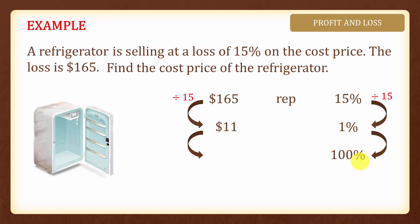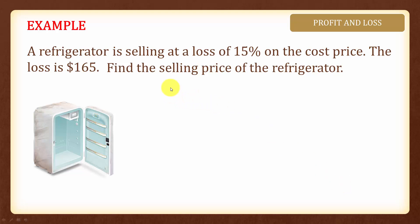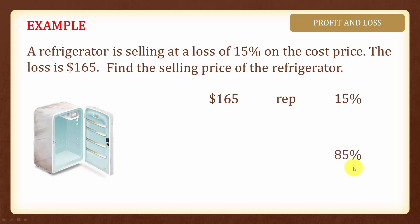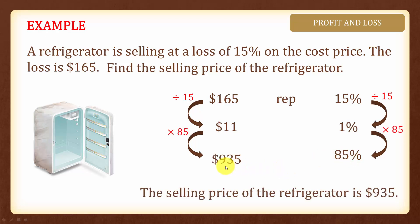We will have $11 represents 1%. To find 100%, we multiply both sides by 100, and hence the cost price of the refrigerator is $1100. Now if we are asked to find the selling price of the refrigerator, similarly $165 represents 15%. If we are selling at a loss of 15%, then the selling price must be 85%. We find 1% by dividing both sides by 15, so $11 represents 1%. To find 85%, we multiply both sides by 85, and therefore the selling price of the refrigerator is $935.